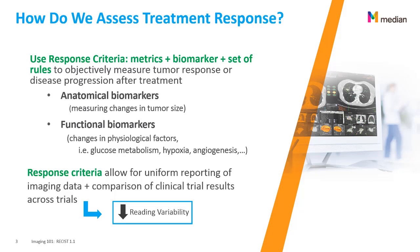Response criteria are used to objectively measure tumor response or disease progression after treatment. They may include anatomical biomarkers such as changes in tumor size, but can also use functional biomarkers — for example, changes in physiological factors such as the measure of glucose metabolism in PET scans, the measure of hypoxia of a tumor, or angiogenesis. Response criteria allow uniform reporting of data among sites, readers, and labs, and are very important for comparing clinical trial results across trials, sites, and countries, and help reduce variability among readers.